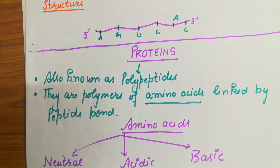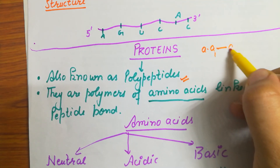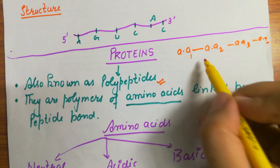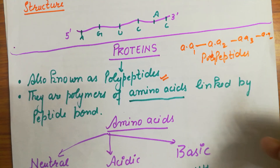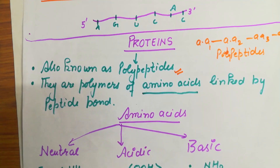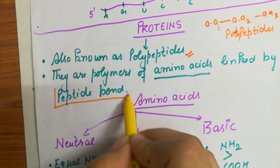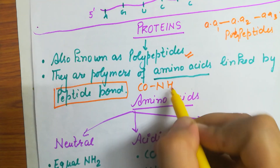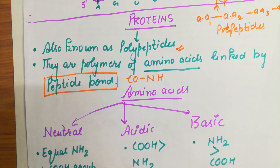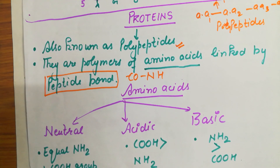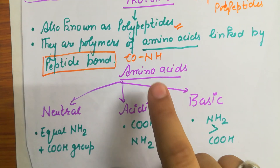Now I'm going to briefly touch on proteins, which we will discuss in detail tomorrow. Proteins are also known as polypeptides. Many amino acids combine to form peptide chains - a polypeptide chain - and polypeptide chains combine to form the protein molecule. Proteins are polymers of amino acids. When two amino acids combine, they do so with the help of a peptide bond. They are polymers of amino acids linked by peptide bonds.